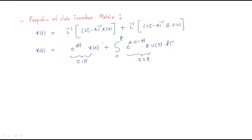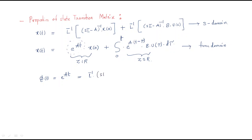This solution is in the time domain, making it the complete time domain solution. However, the original equation has s-terms, meaning it is directly in the s-domain. Now, in e^(At), we can define phi(t) as e^(At). Therefore, phi(t) equals the Laplace inverse of (sI minus A) whole inverse. This phi(t), or e^(At), is called the state transition matrix.